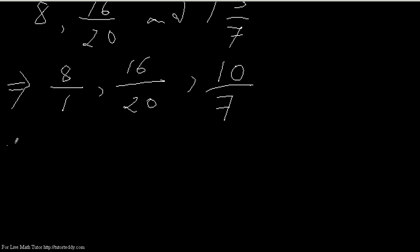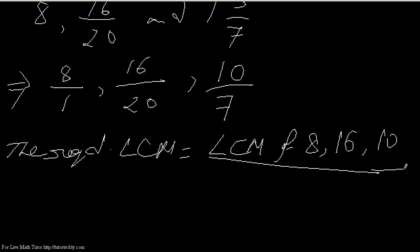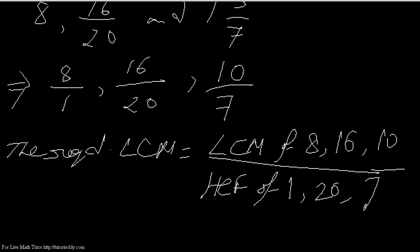Now, what is the formula for finding the LCM of fractions? The required LCM equals the LCM of the numerators — that means LCM of 8, 16, and 10 — divided by the HCF of the denominators — so HCF of 1, 20, and 7.